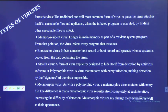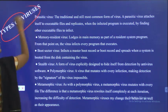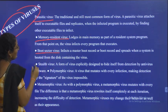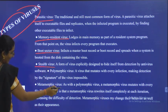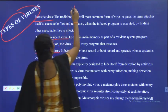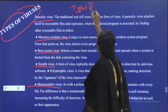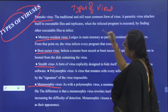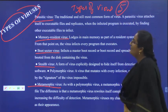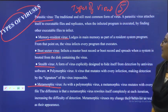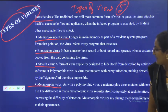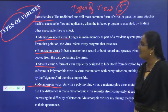What are the types of viruses? There are five types: parasitic virus, memory resident virus, boot sector virus, stealth virus, and metamorphic virus.